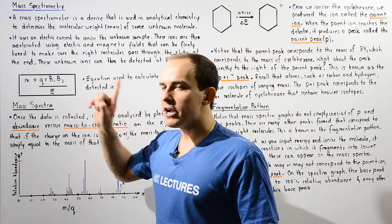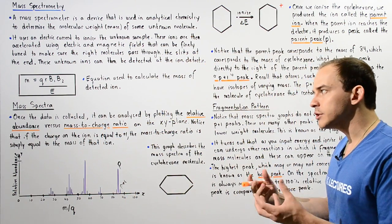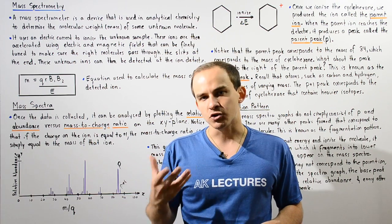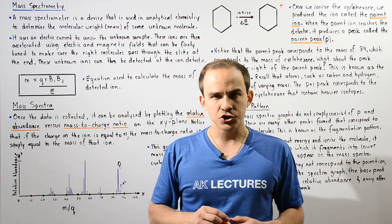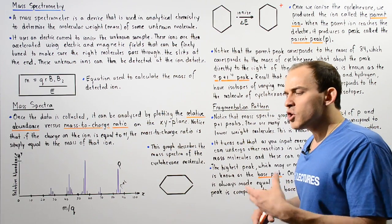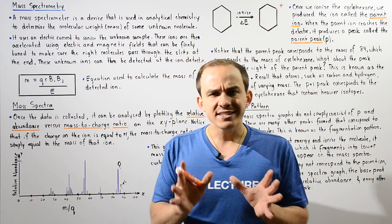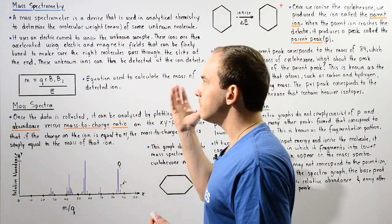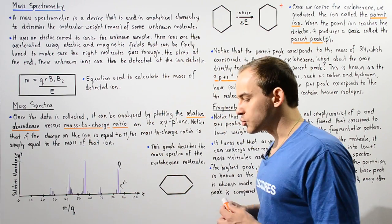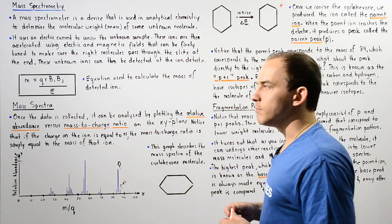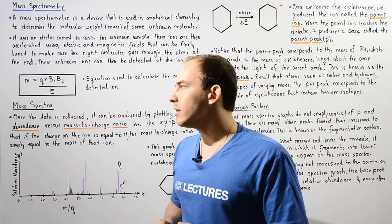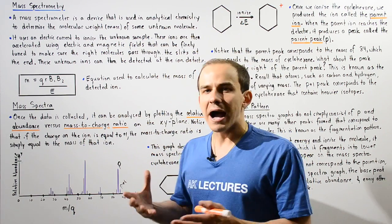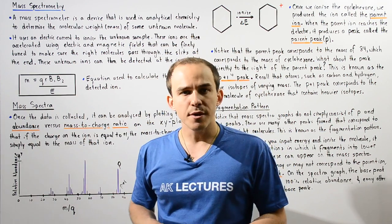If you want to learn about the physics behind the mass spectrometer, go back and watch the lecture on mass spectrometers in the physics section. Now, once we collect all the mass data, we analyze it by creating something called the mass spectra — a graph that can be readily used to examine the collected information.